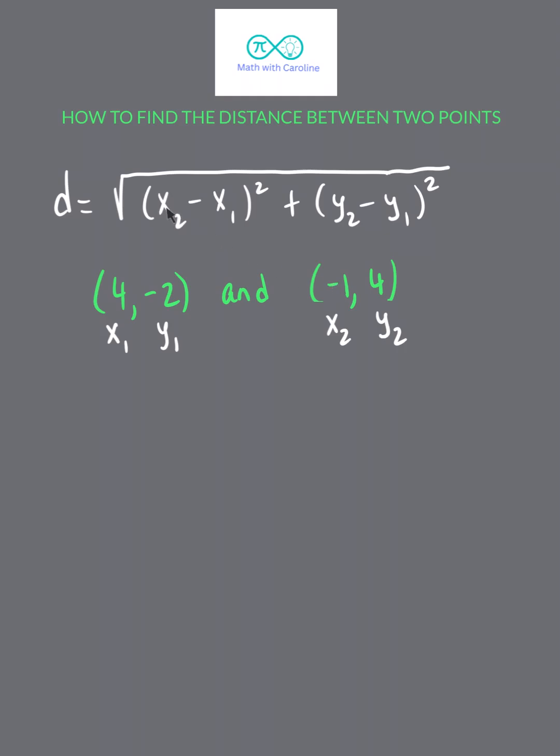So we're going to plug in -1 to this spot, 4 into this spot. We're going to plug in this 4 to this spot, and this -2 into this spot, and simplify.